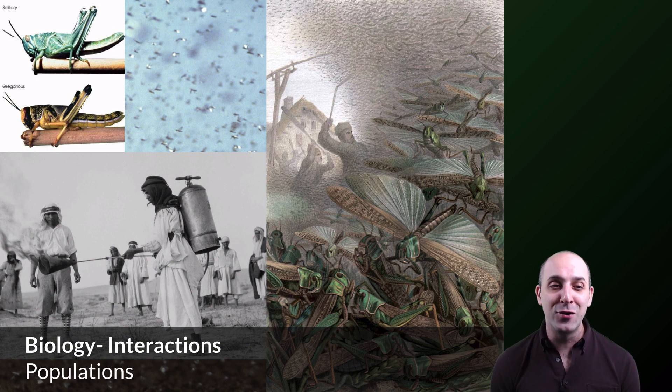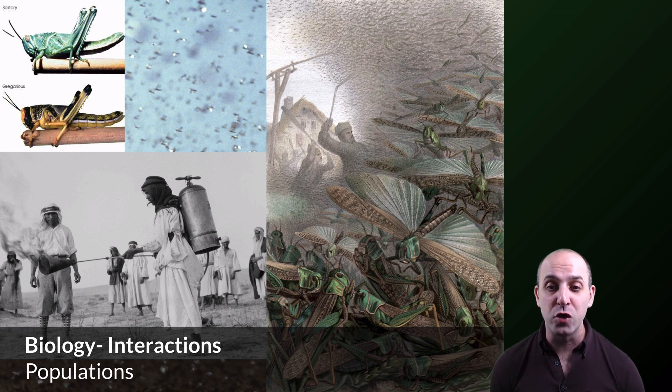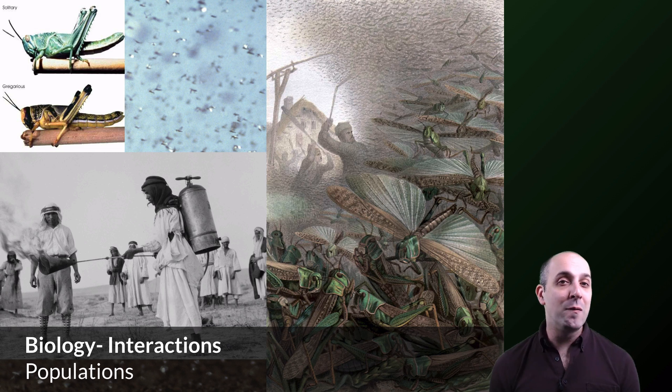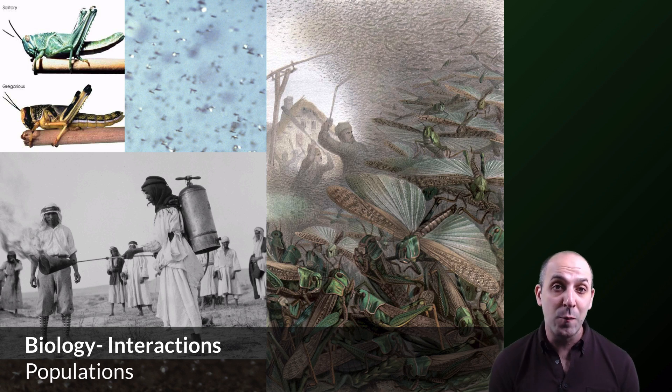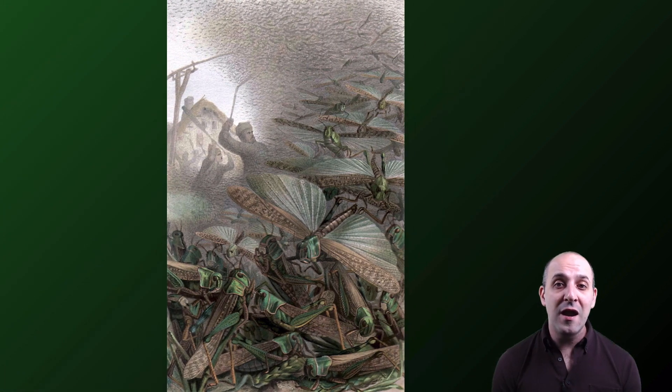Some solutions have been relatively dramatic, like this image from Palestine in the 1930s of individuals using flamethrowers to control the locust population. Modern methods of locust control tend to be a little bit more refined than just burning them all, but at the same time it illustrates that population biology is something that's not only important from an academic standpoint, it can have real-world consequences for the human population as well.